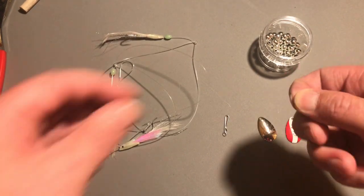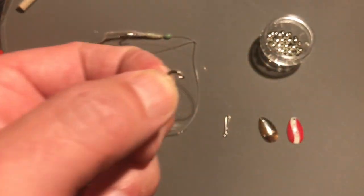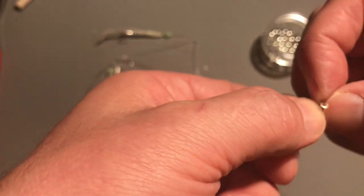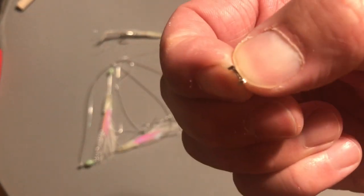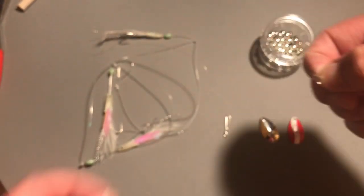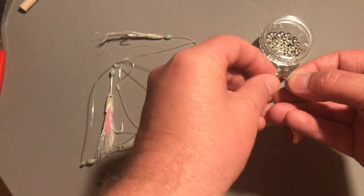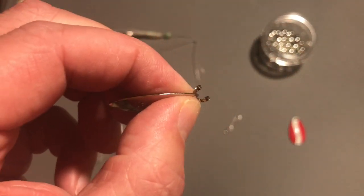And what you're going to need for your spinner blade to attach to your line is a clevis. And again you can buy these on eBay. And that just allows the spinner blade to spin round your line freely. And that will just attach like that.